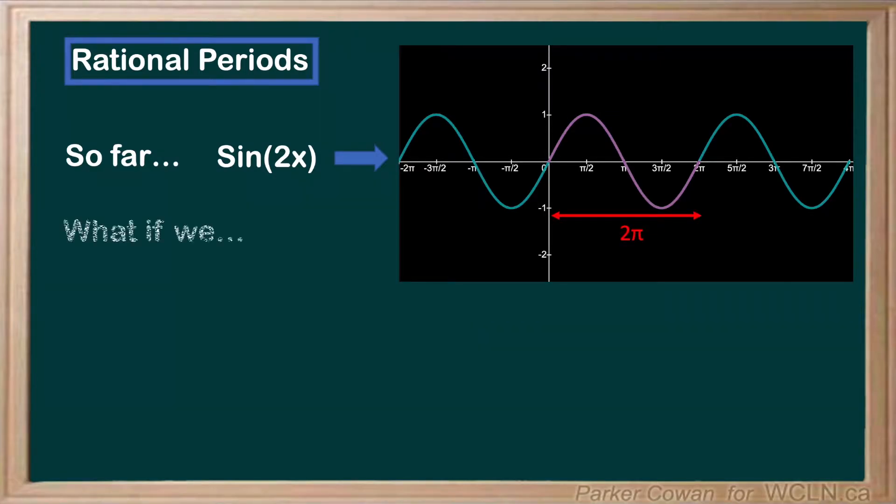But what if our horizontal scaling coefficient is also a factor of pi? In other words, what if we put a pi inside the brackets of sine or cosine?